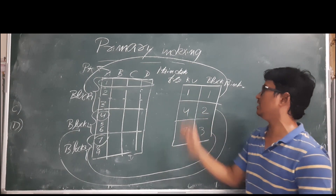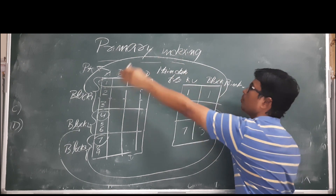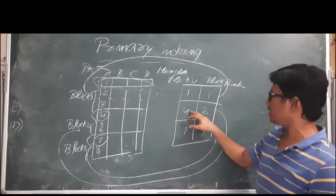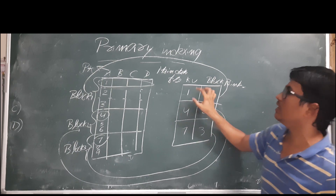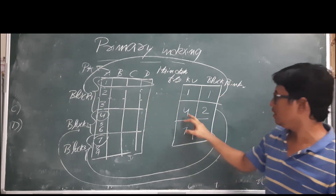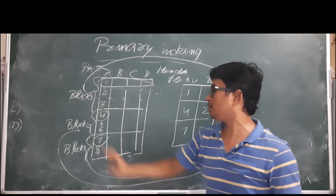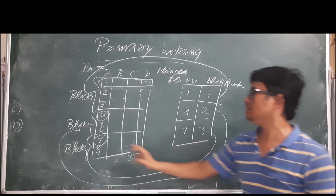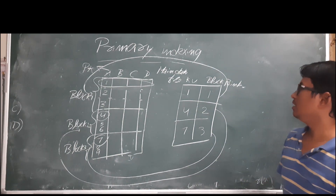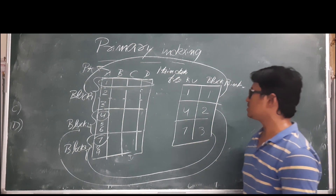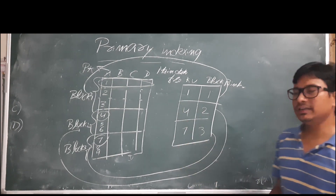We can search easily now. If I want to search record 1, I go to block pointer 1. Records 1, 2, 3 belong to block one; 4, 5, 6 belong to block two; and 7, 8, 9 belong to block three. So looking at this, what type of indexing is this — dense indexing or sparse indexing?